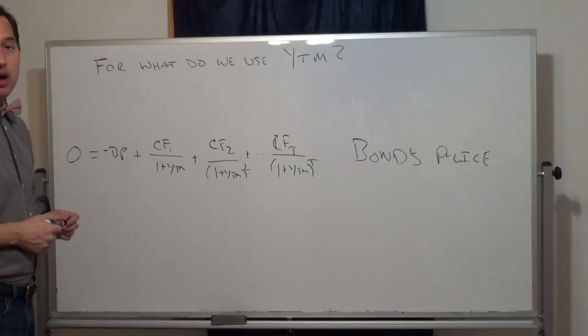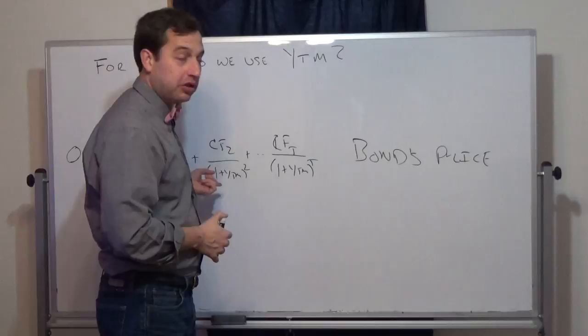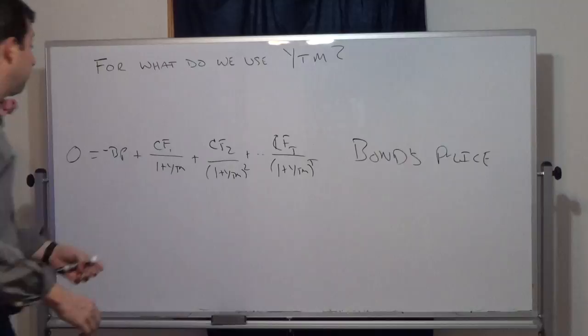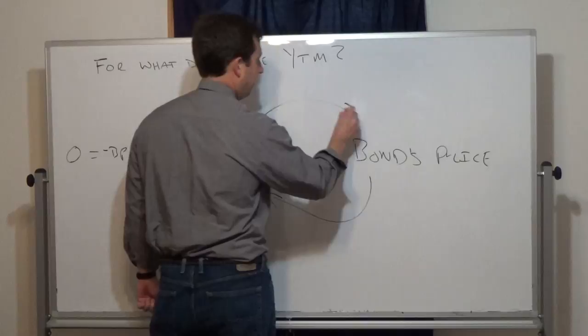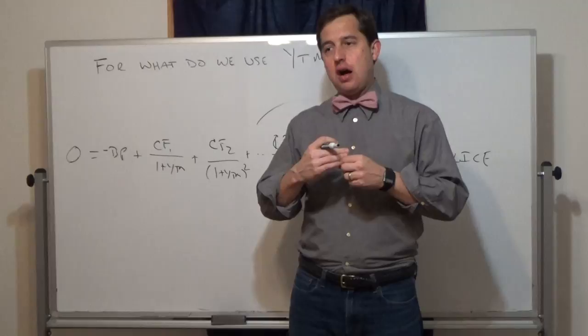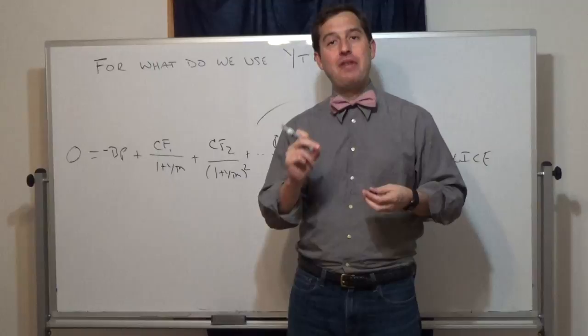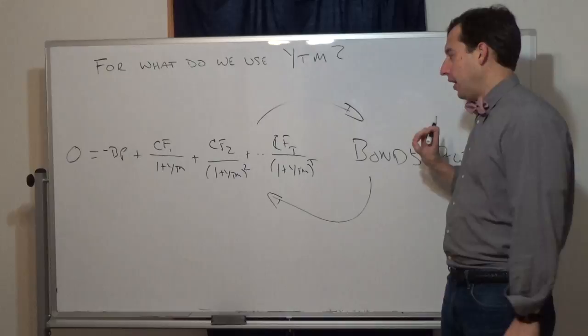If I want to find the bond's price I use yield to maturity, but if I want to find the yield to maturity I use the bond's price — so this is circular. We cannot use yield to maturity to find the bond's price, or more accurately the bond's value. We do not use yield to maturity for bond valuation.